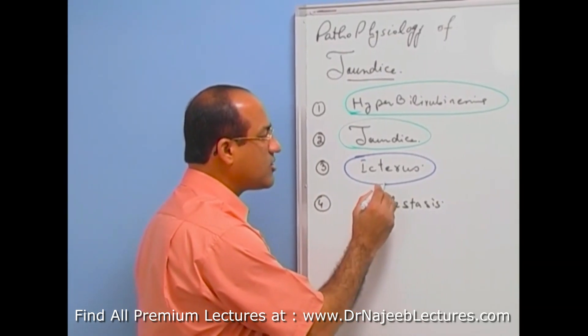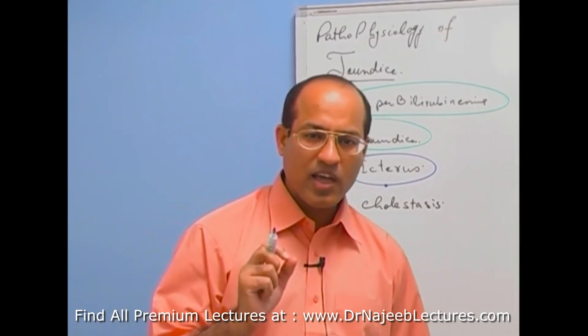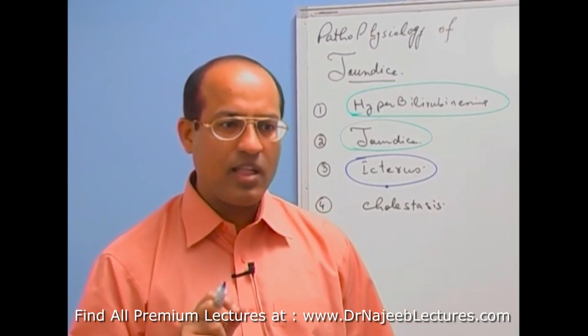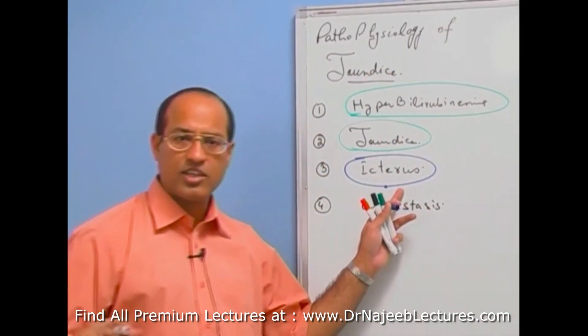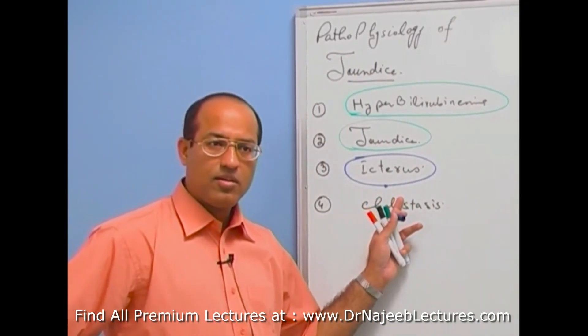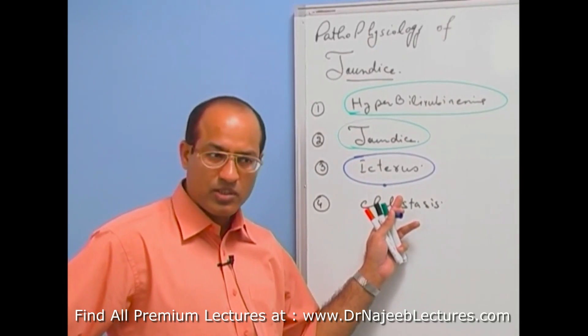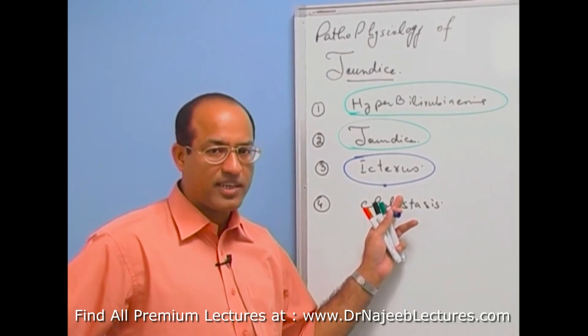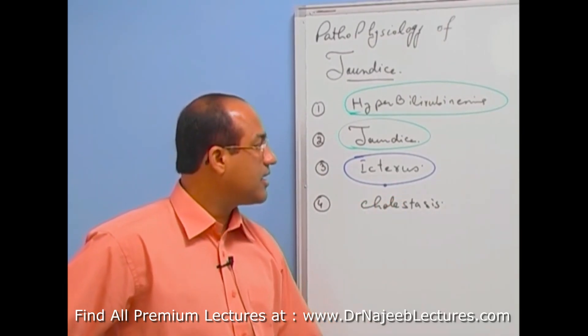Again, what is icterus? Icterus is yellow coloration of sclera due to hyperbilirubinemia. Remember, that sclera shows the yellow coloration very easily as compared to the rest of the body tissues. The reason being number one, sclera is white, so faint yellow color can be appreciated.